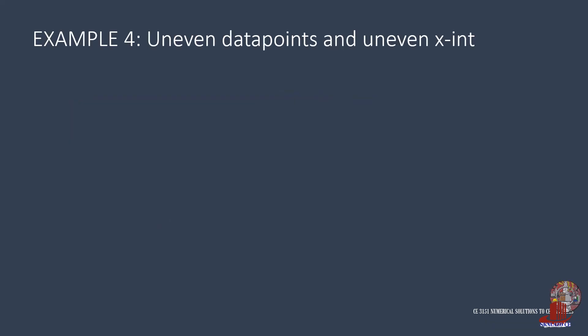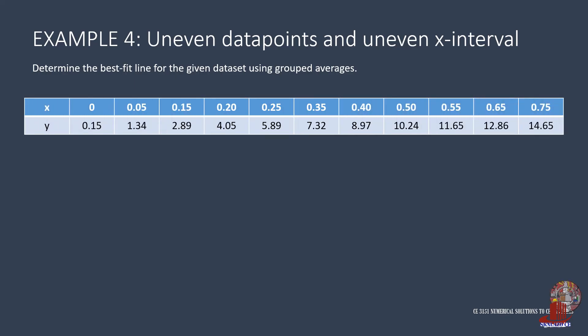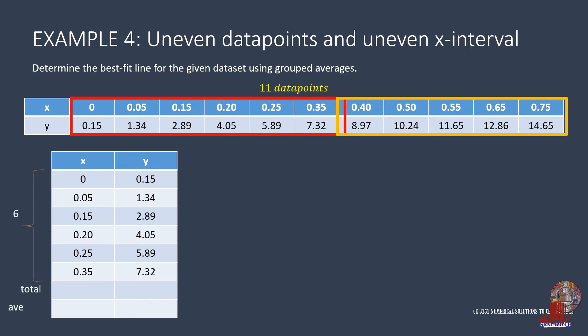The fourth example has odd numbered data points and uneven x intervals. These conditions do not affect the method and the procedure still remains the same. So with 11 data points, we take the first group with 6 coordinates, that is, from X equal to 0 to X equal to 0.35 with their Y counterparts. Add all X values and get 1. This is divided by 6 to have 1/6 as the average.